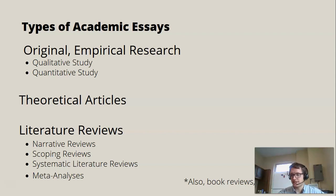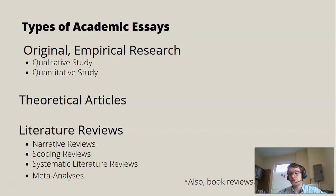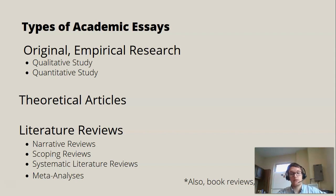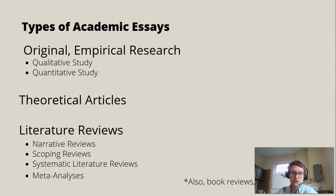A scoping review is kind of the next step up. A scoping review is generally trying to answer the question of what is the extent of current research on a given topic — what's the scope, is more research needed, and if so, what kind? Scoping reviews often serve as the springboard for future research by identifying gaps in the current literature and recommending next steps, pointing out possible directions for future research to take.